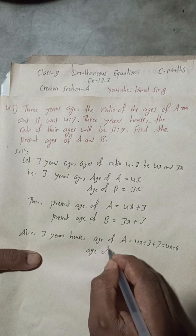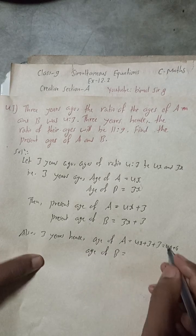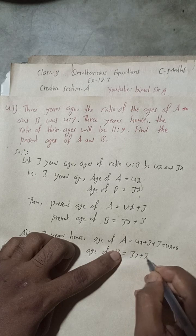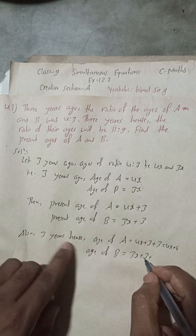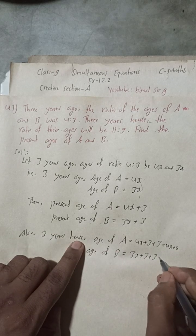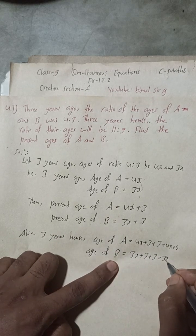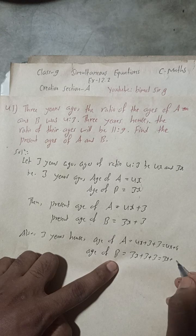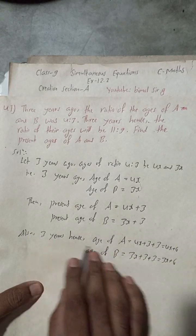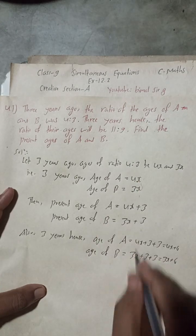Three years hence the age of B will be the present age of B, which is 3X plus 3, and adding 3 more years gives 3X plus 6.